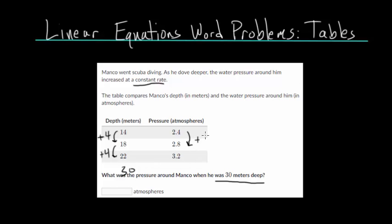In fact, it looks like we move up 0.4. So 0.4 is the increase in y, or in our pressure, every time we increase our depth by 4 meters.